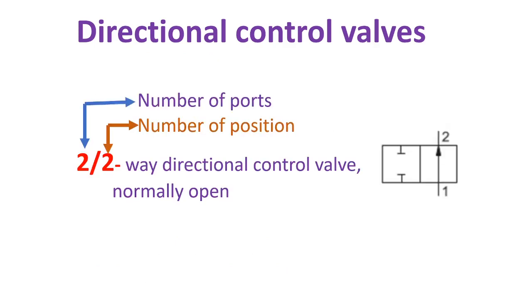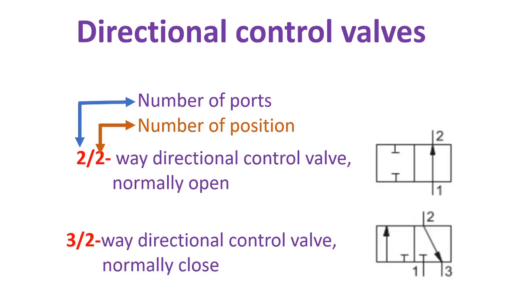This is one of the examples of directional control valves. The first letter represents the number of ports and the second letter represents the number of positions. This valve is a two two-way directional control valve normally open. The next one is a two two-way directional control valve normally closed.